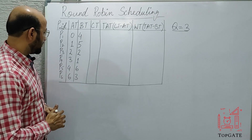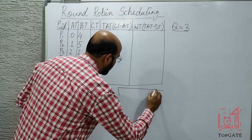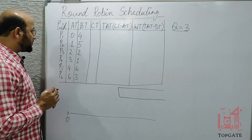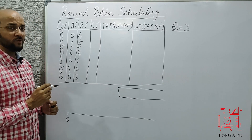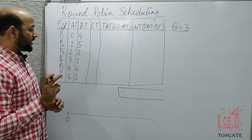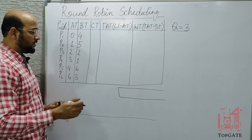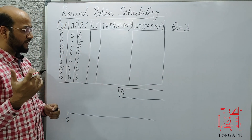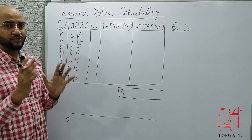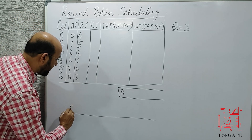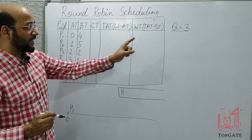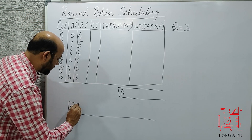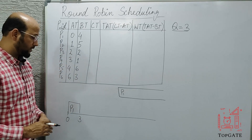First let's make the ready queue, and then with the help of the ready queue we'll make the Gantt chart. Currently we are at time zero. At time zero, I'll find out if there is any process arriving in the RAM. Yes, P1 is arriving at time zero, so there is only one process — P1 goes into the RAM. Since there is only one process, I'll schedule it on the CPU. P1's burst time is 4 but the time quantum is 3, so P1 will start at zero and stop at three.